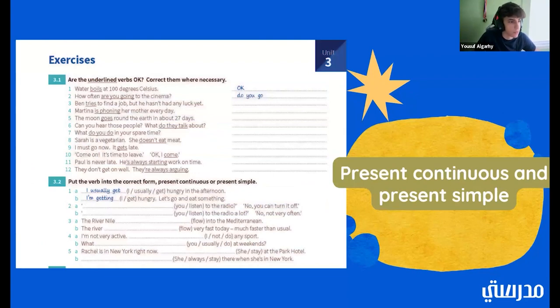So here we have some exercises. So we have underlined verbs. And remember, verbs are the action. It's what people are doing. So we have to say if they're OK or if we have to correct them. We have to change them. So number one, we have water boils at 100 degrees Celsius. That's OK. Number two, how often are you going to the cinema? That one is incorrect. So we'd have to change it to how often do you go to the cinema? So number three, Ben tries to find a job. But he hasn't had any luck yet. Do we need to change that one?